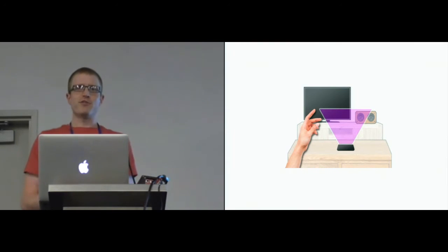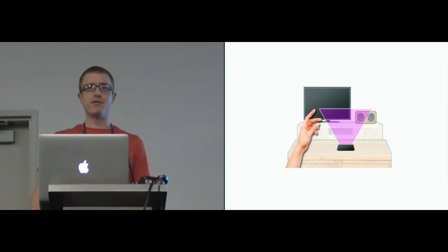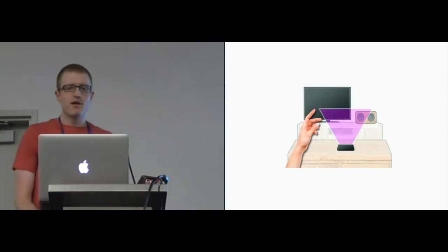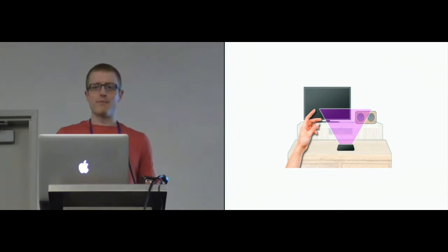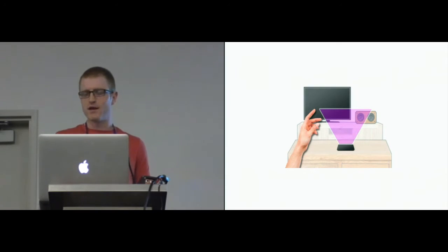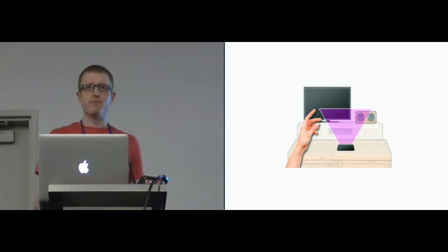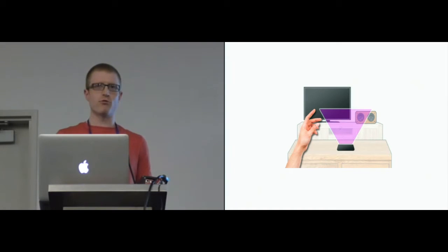When users want to use mid-air gestures to interact with something, one of the first things they have to do is find where to perform their gestures. If they don't gesture in a place where the sensors can see them, then their actions are going to have no effect on the device. The image there shows an example: the user wants to gesture towards their phone on the coffee table, but their hand isn't within the sensor space for that device. Unlike touch screen or keyboard input, the mid-air gesture sensor has a more vague and ambiguous boundary between when users are interacting with the system and not.